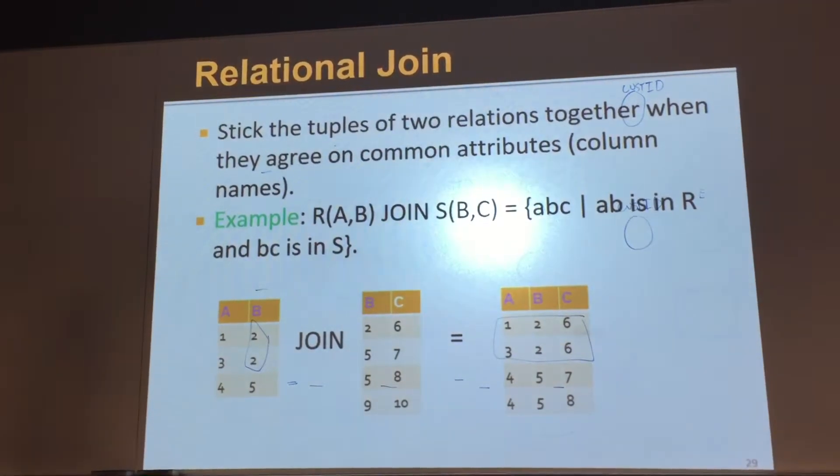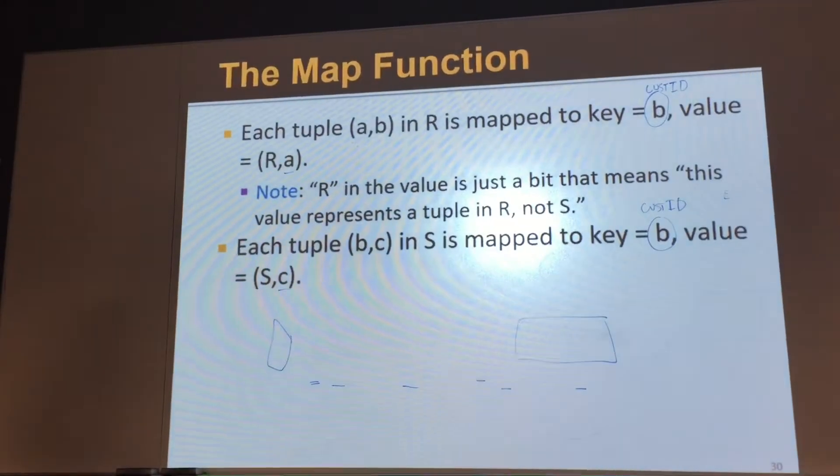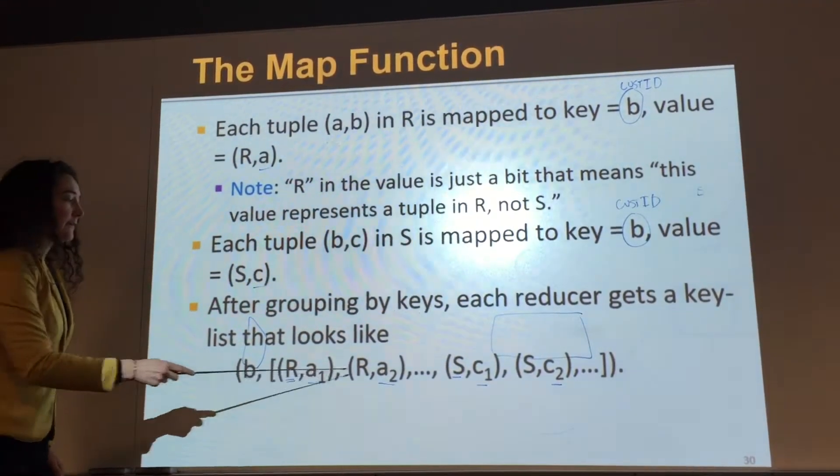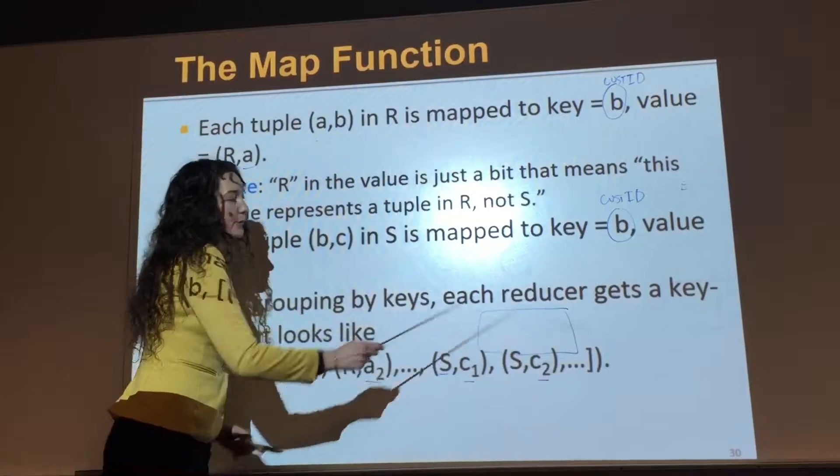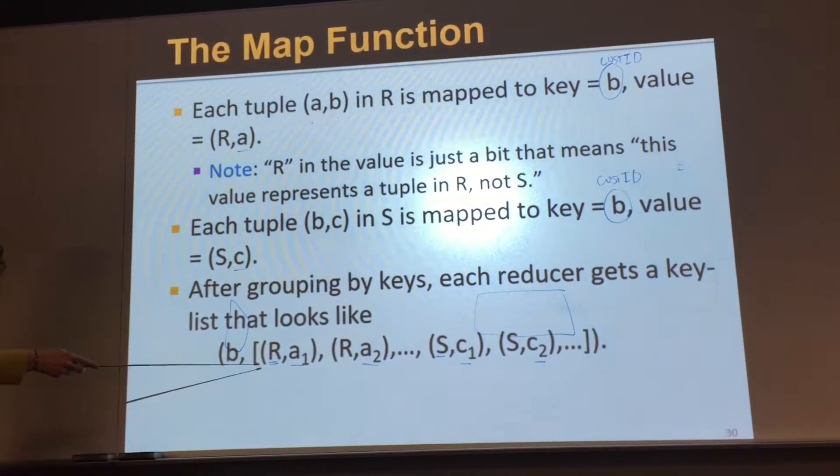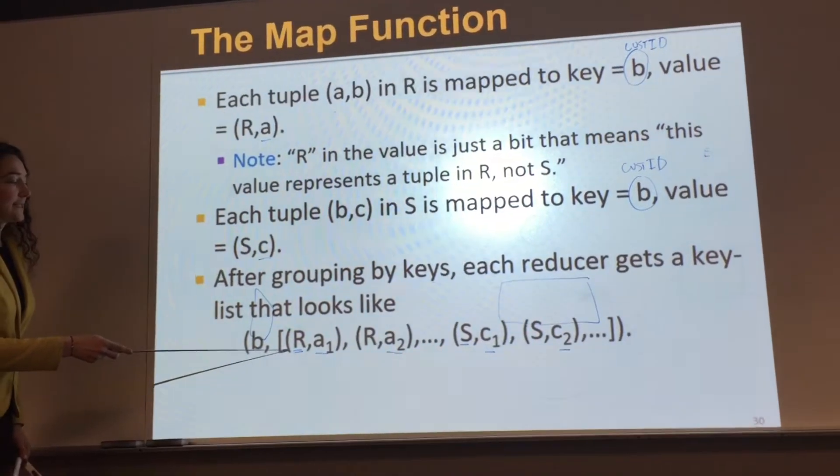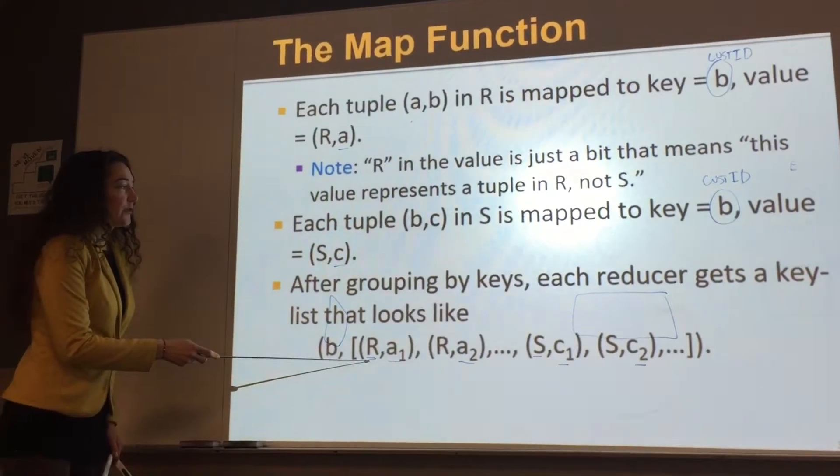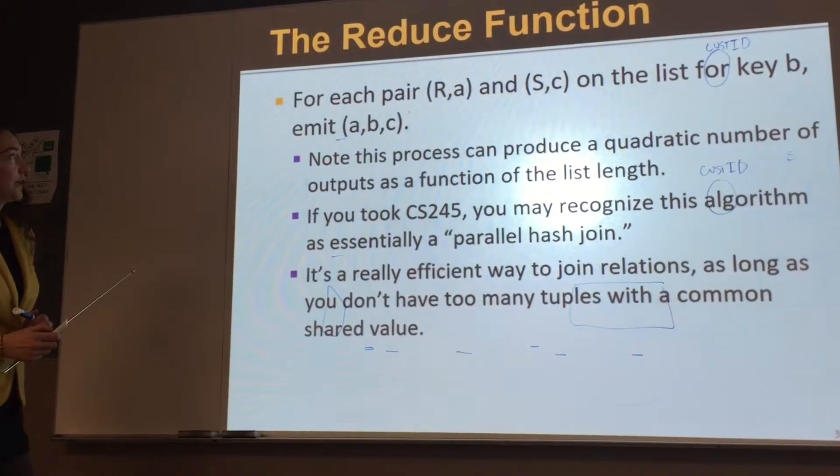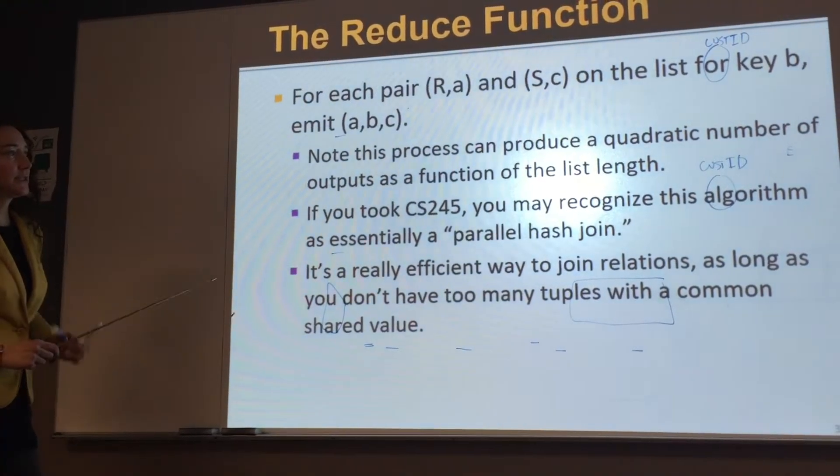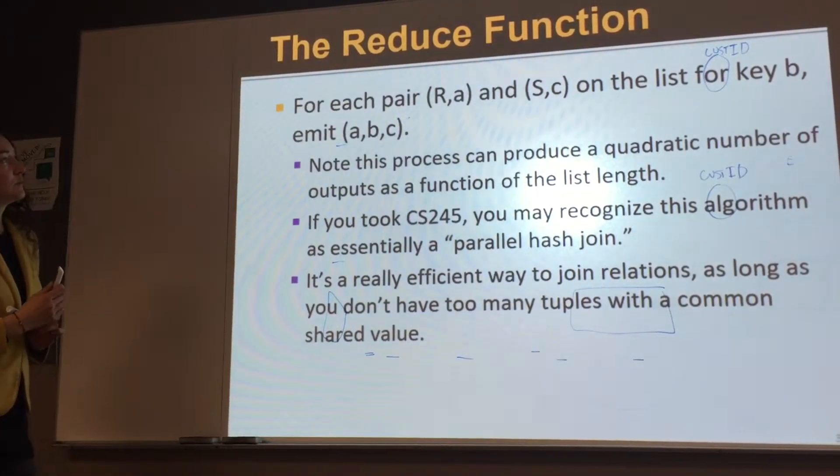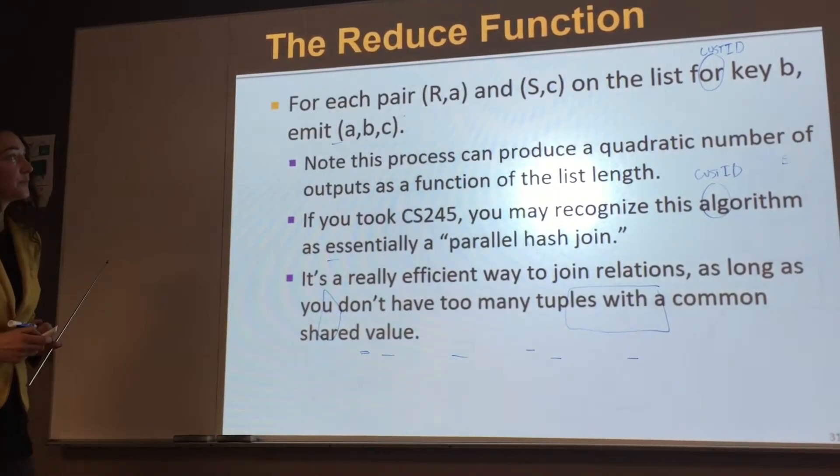In the first table, there are two entries for customer ID number two. And so if we have that, then we're going to produce two in the results. So the reducer is taking these key value pairs from the mappers to produce the final result. And the final result is a table that has A, B, and C together.